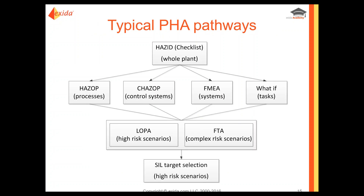Within a typical PHA, we can see where a CHAZOP would fit. You can have a hazard ID looking at potential hazards within the whole plant, use CHAZOP for the process and for control systems, FMEA for support systems, and what-if for tasks. Then for high-risk scenarios you might do LOPA and the IEC 61511 standard, for complex risk scenarios a fault tree analysis, and ultimately, if appropriate, select SIL targets.